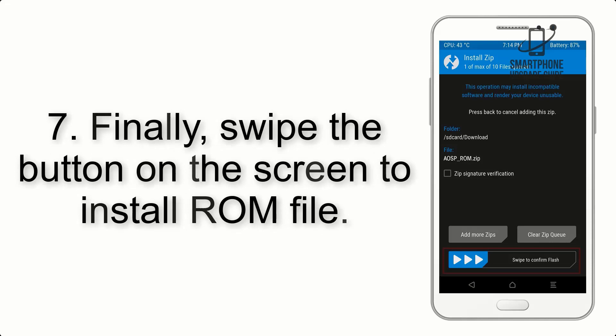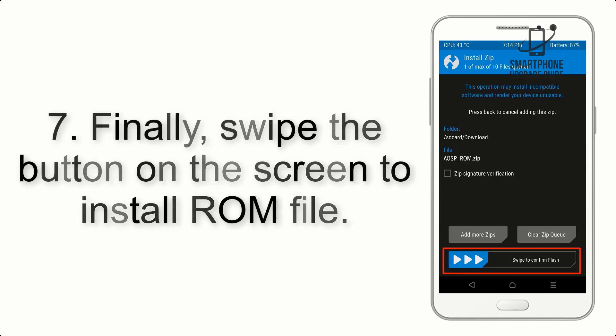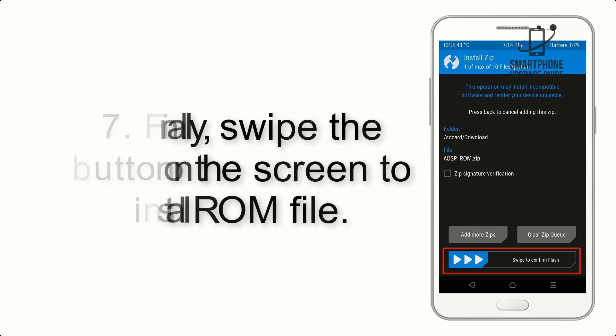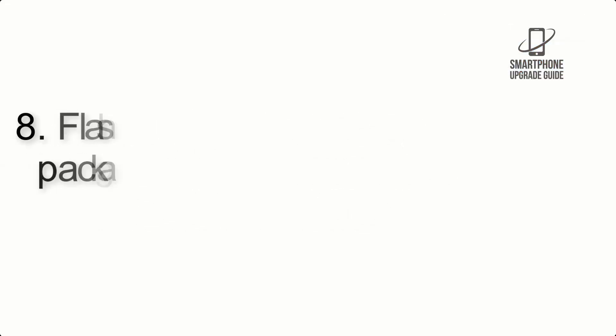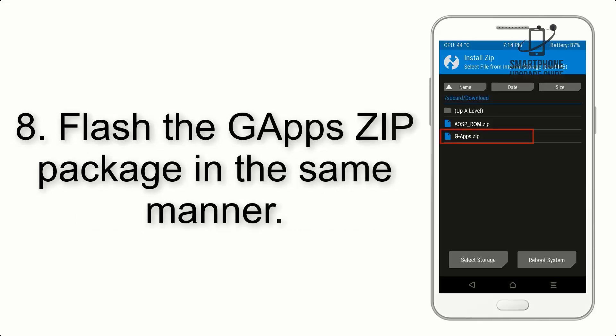Step 7: Finally, swipe the button on the screen to install the ROM file. Step 8: Flash the GApps ZIP package in the same manner.